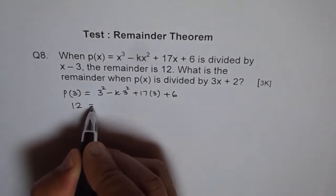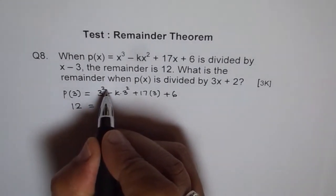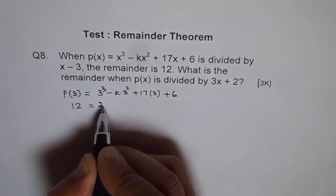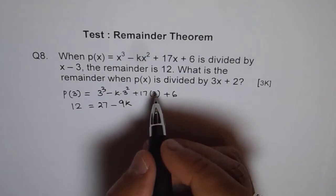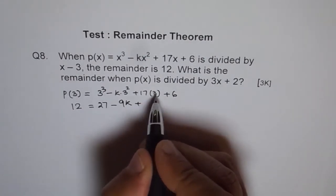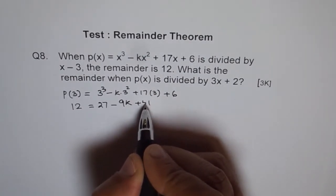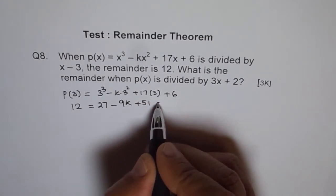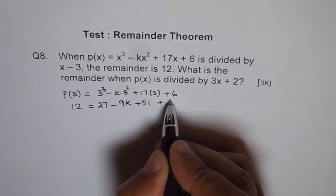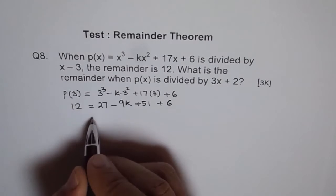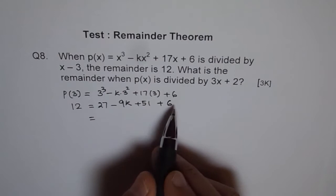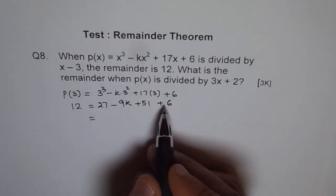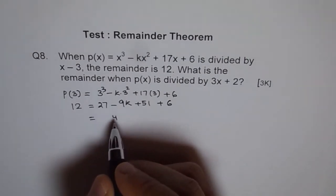So we can say 12 equals to, well 3 cube is 27 minus 9k and 17 times 3 is 51 plus 6, which is equal to, so we will add 27, 51 and 6. So 51 plus 6 is 57 and 57 plus 27 is 84 minus 9k.